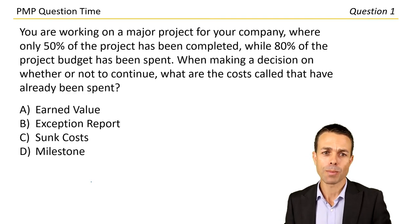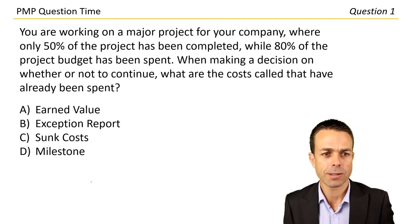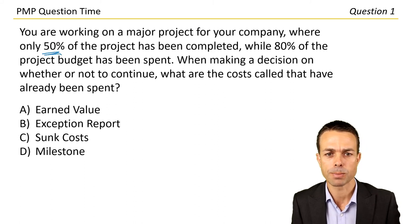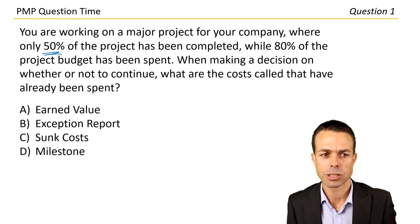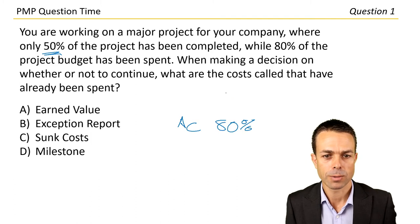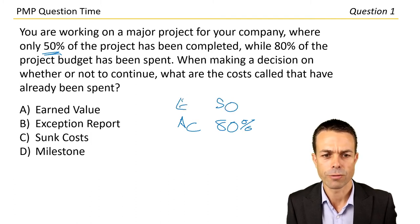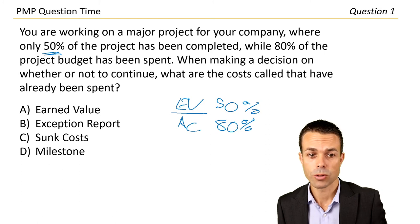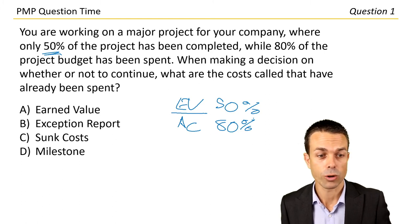First question. You're working on a major project for your company where only 50% of the work has been completed. 80% of the budget has been spent — that could be an actual cost. So 80% is our actual cost and 50% has been completed — that's our earned value or EV. When making a decision on whether or not to continue, what are the costs called that have already been spent?